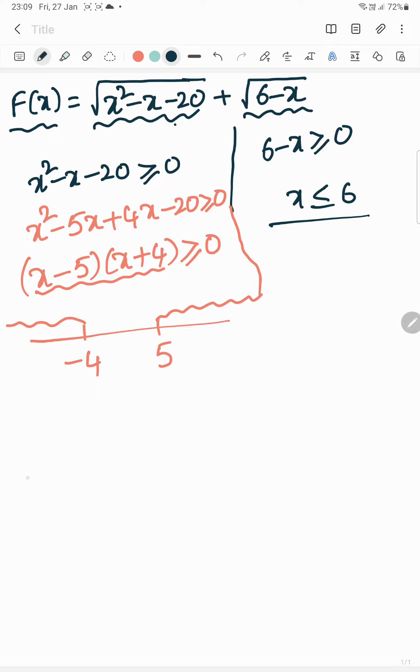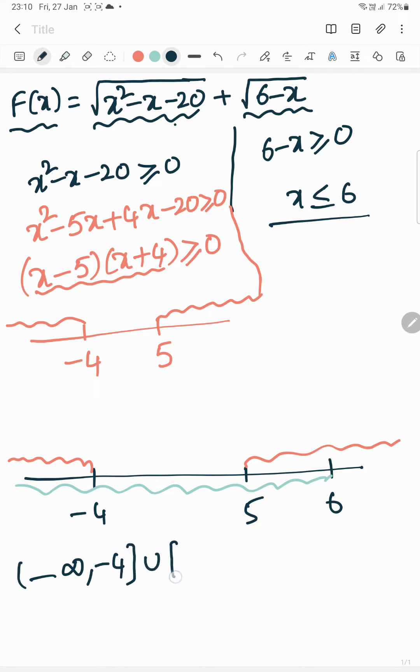Now on the entire number line, it is minus 4, it is 5, it is 6. For the first function, domain is less than or equal to minus 4 or greater than or equal to 5. For the second function, less than or equal to 6. Therefore, the common part, the final domain, is minus infinity to minus 4 closed union 5 to 6 closed, the common part.